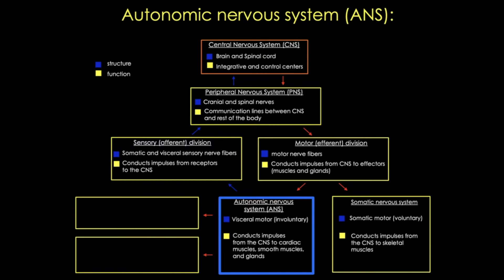The autonomic nervous system is a component of the peripheral nervous system that regulates involuntary processes including heart rate, blood pressure, respiration, digestion, and sexual arousal. It contains three anatomically distinct divisions: the sympathetic, the parasympathetic, and the enteric. The sympathetic and parasympathetic nervous systems contain afferent and efferent fibers that provide sensory input and motor output respectively back to the CNS.